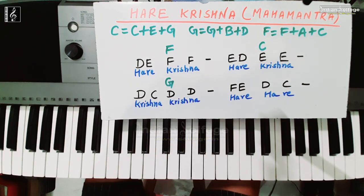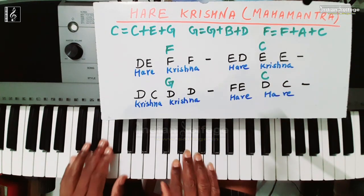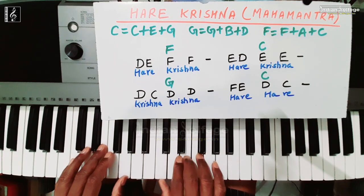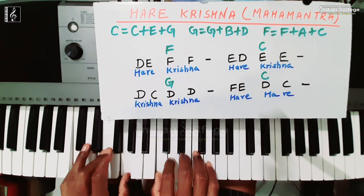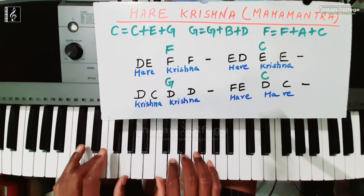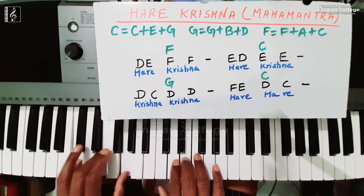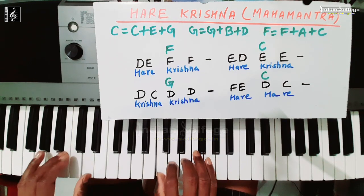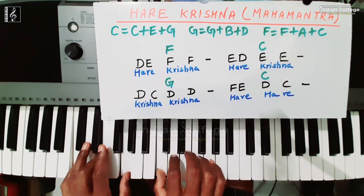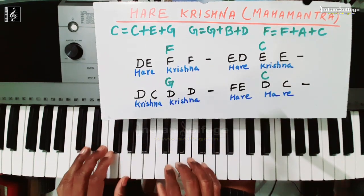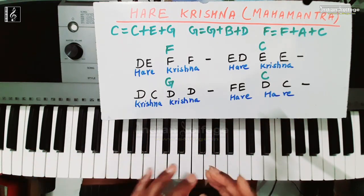Last part है F E D C — यहाँ पर लगाना है C major chord। So: F E D C with C chord। Full sequence: D E F F (F chord), E D E E (C chord), D C D D (G chord), F E D C (C chord)। इस song का chord progression हो गया: F, C, G, C।